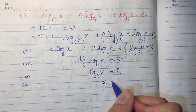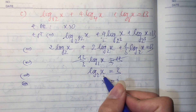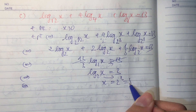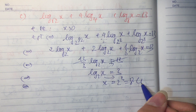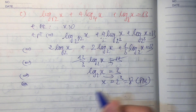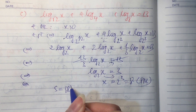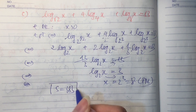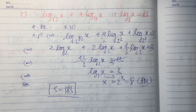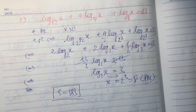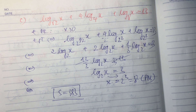Rút ra x bằng 2 mũ 3 tức là bằng 8. 8 là thỏa mãn. Phương trình có 1 nghiệm duy nhất là 8. Như vậy thầy đã giải quyết xong phần phương trình logarit trong sách giáo khoa.